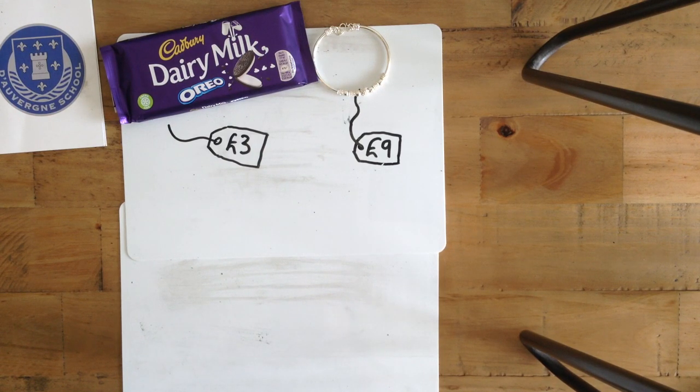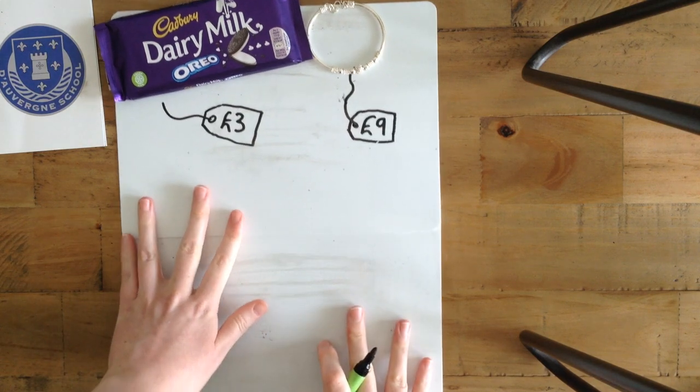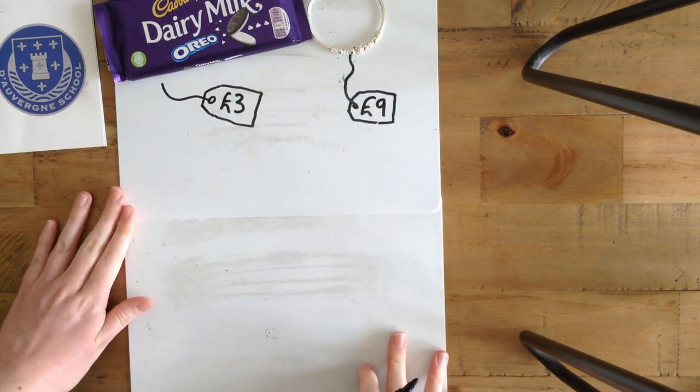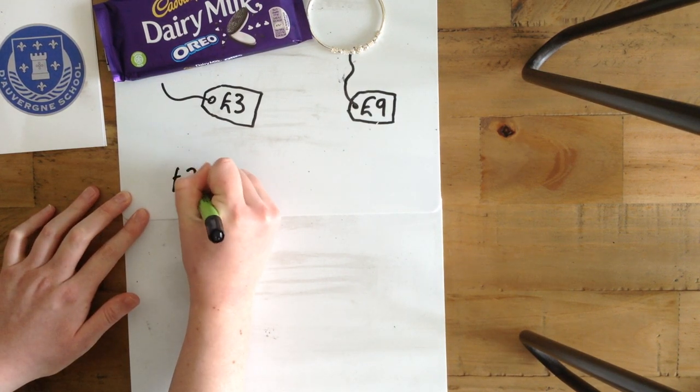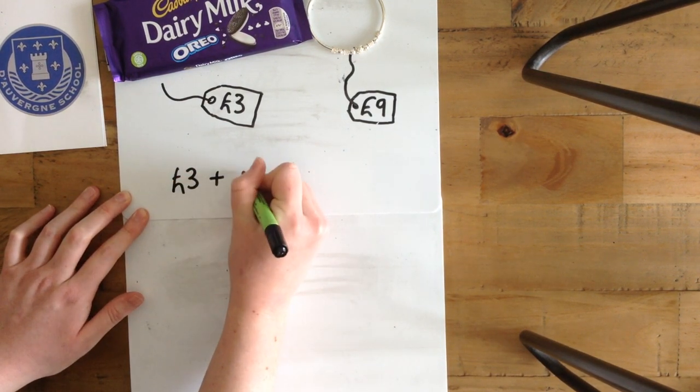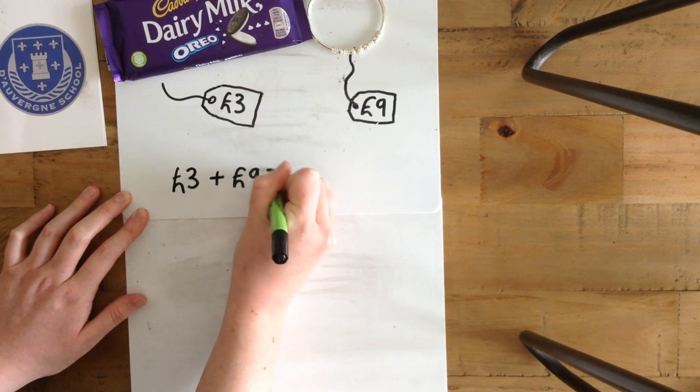I'm going to show you a way to do this. First of all, we need to write our calculation. £3 add £9 equals.